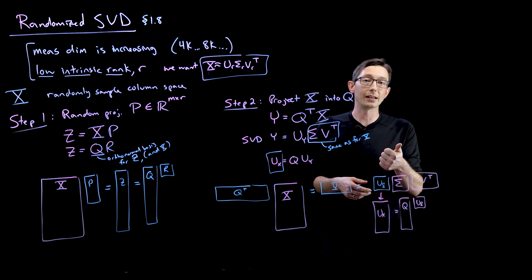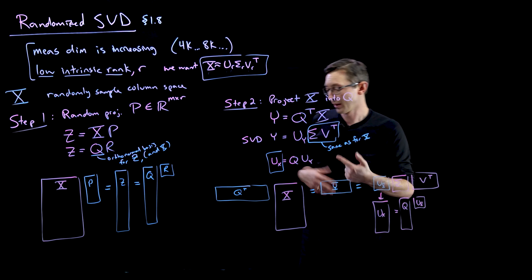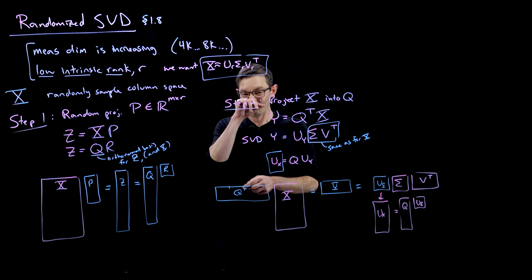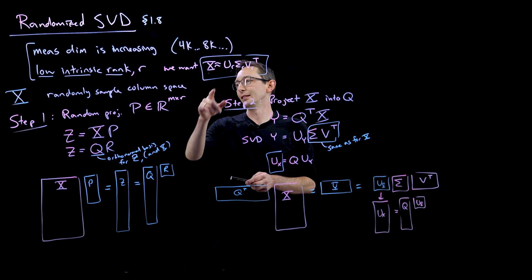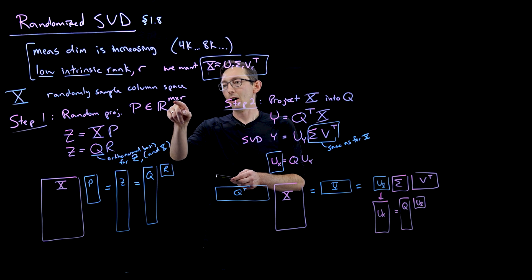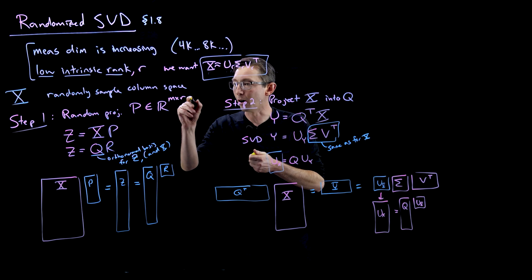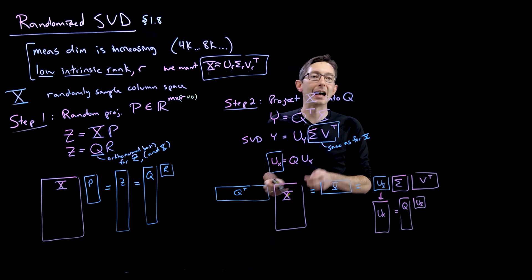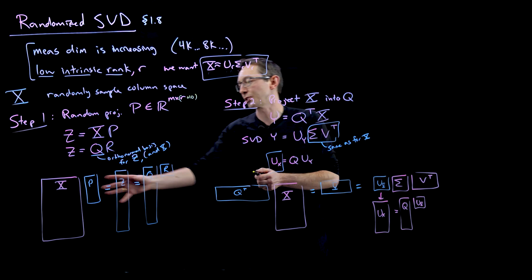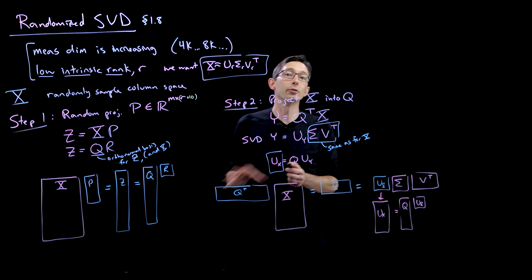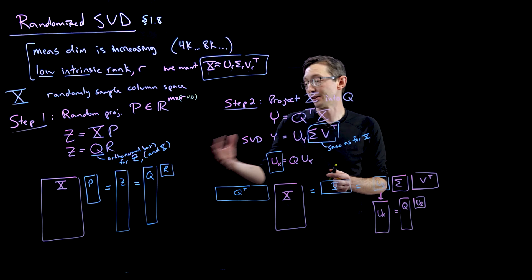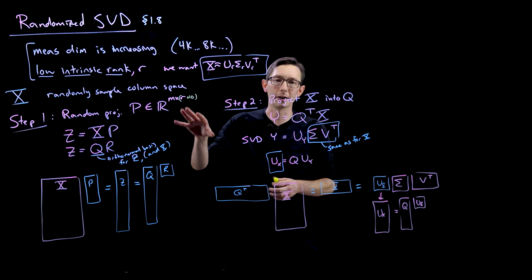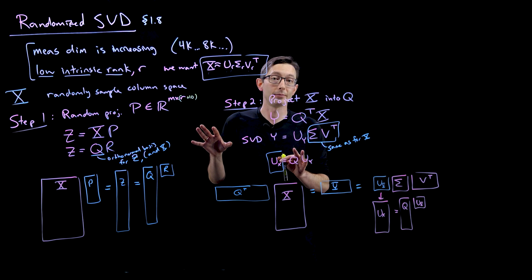Oversampling is pretty easy to understand. We basically, instead of measuring R columns, we just do R plus 5 or plus 10. And just by adding 5 or 10 extra random projections, we massively improve the efficiency, sorry, the accuracy of this algorithm. So I'll tell you about power iterations and oversampling next. Thank you.